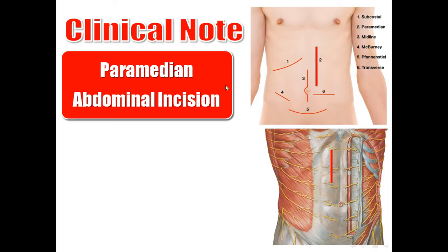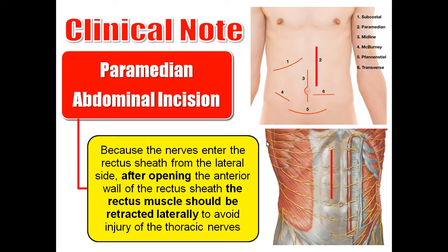Regarding the paramedian abdominal incision: in this incision, the anterior wall of the rectus sheath is opened, and the rectus abdominis muscle is retracted laterally. Then the posterior wall is opened. The muscle is retracted laterally to avoid injury to the intercostal nerves, which enter the rectus sheath from the lateral side.